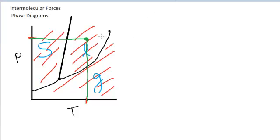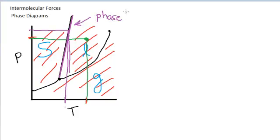These lines represent the transitions between the phases. For example, this purple line represents the melting point of the substance at the variety of pressures indicated on the graph. At this particular pressure, the melting point or freezing point of the substance is represented as this temperature. We can also call this the phase transition, or the phase boundary between the phases of solid and liquid. Along this line, that represents the phase boundary, the temperature at which the substance goes from solid to liquid, or the temperature at which the substance melts or freezes at the given pressures.